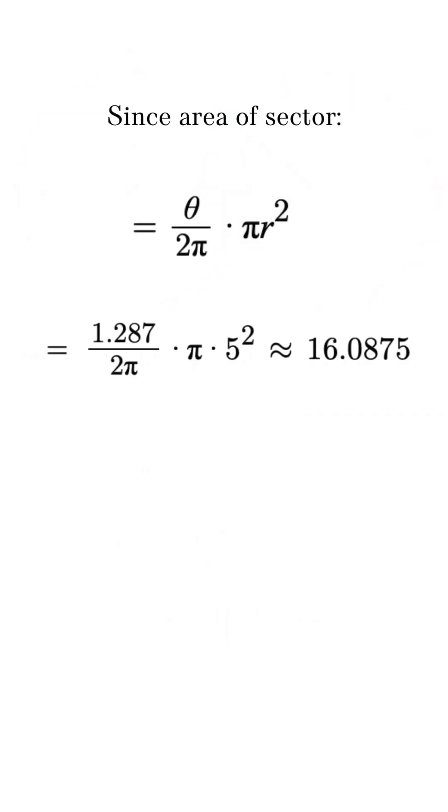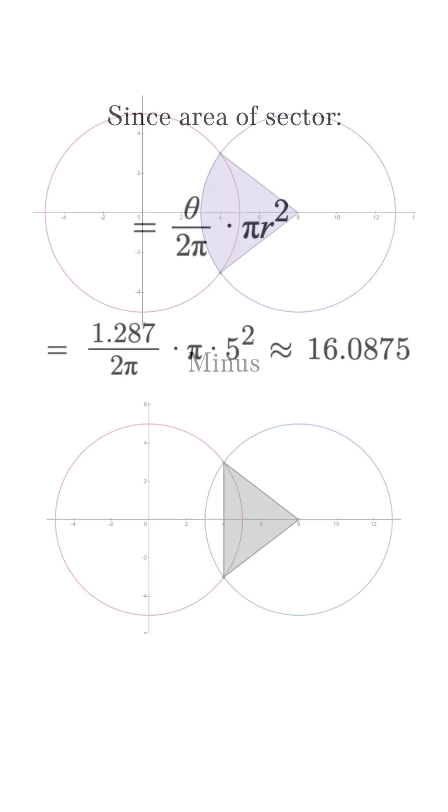Now, the area of a sector is equal to theta over 2 pi times pi r squared. So, that gives us the answer of 16.0875.